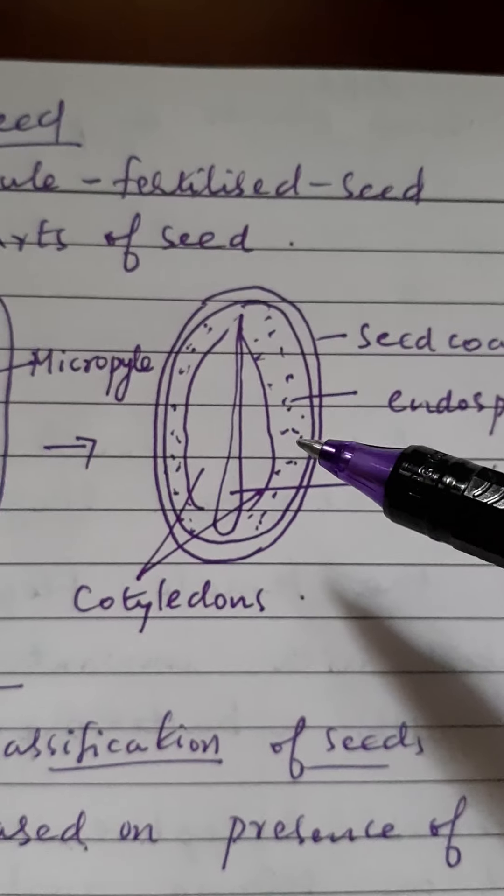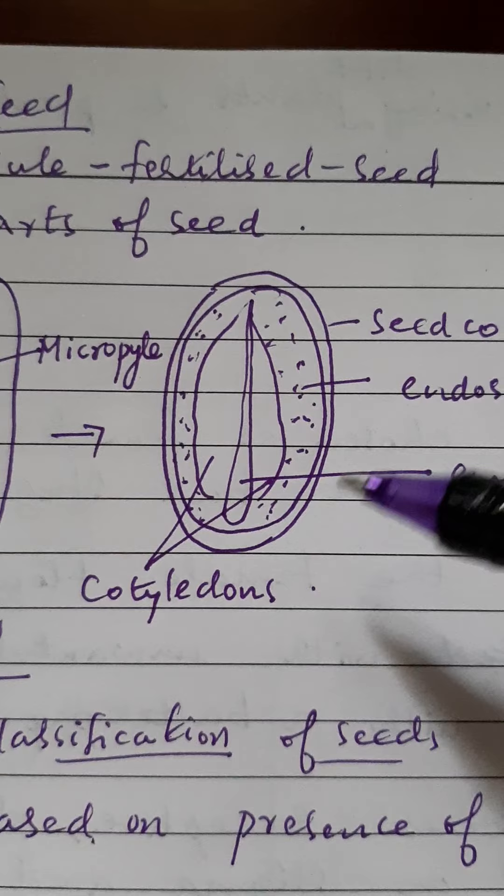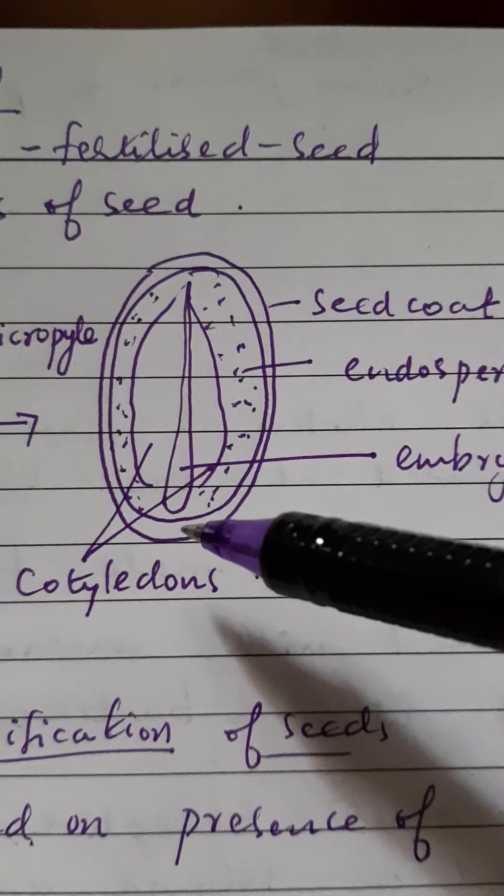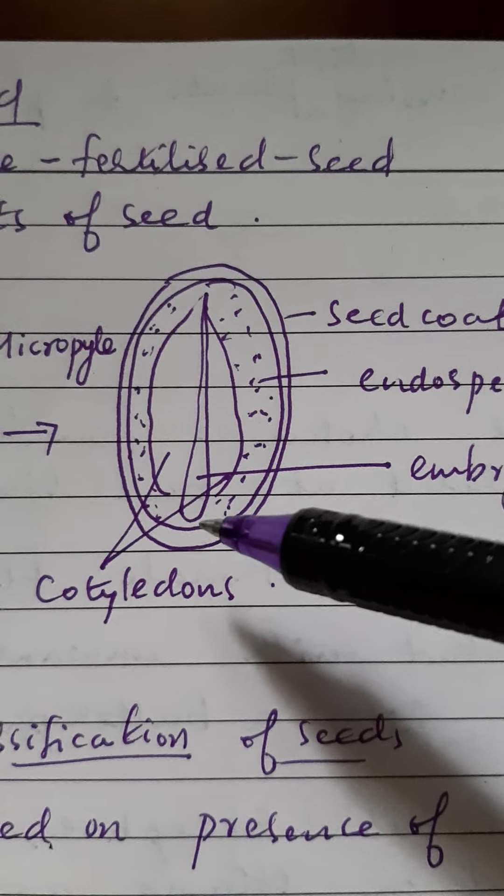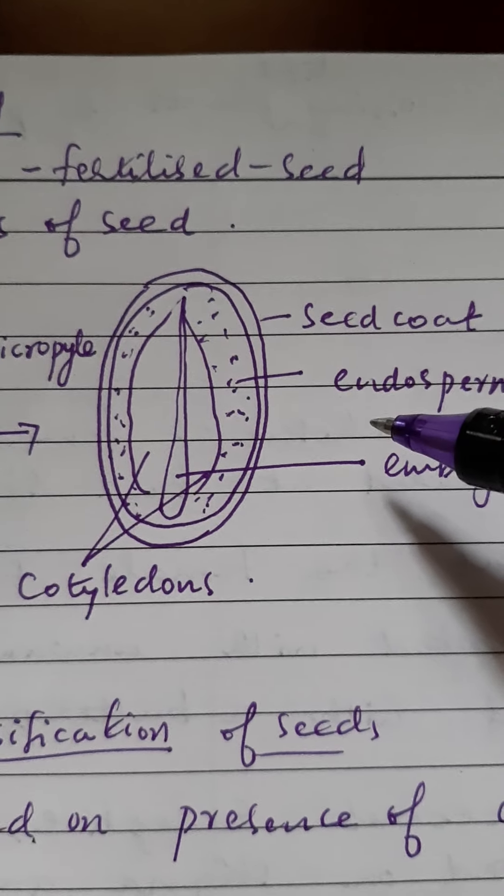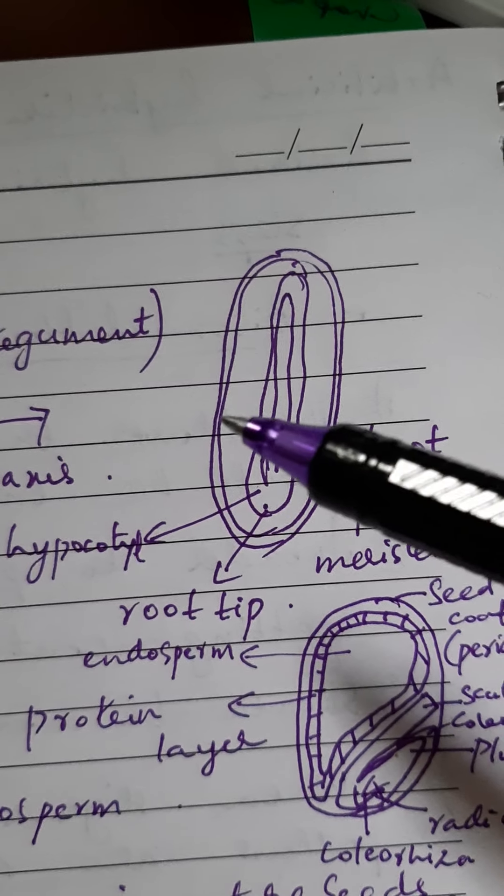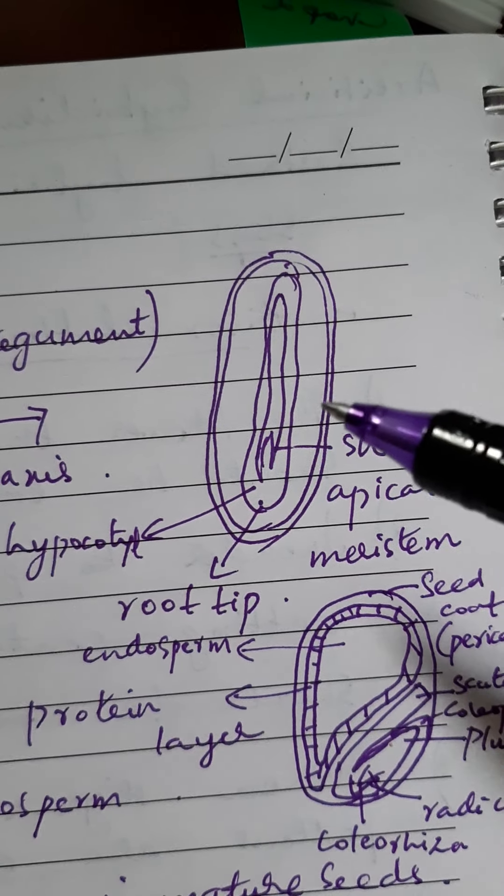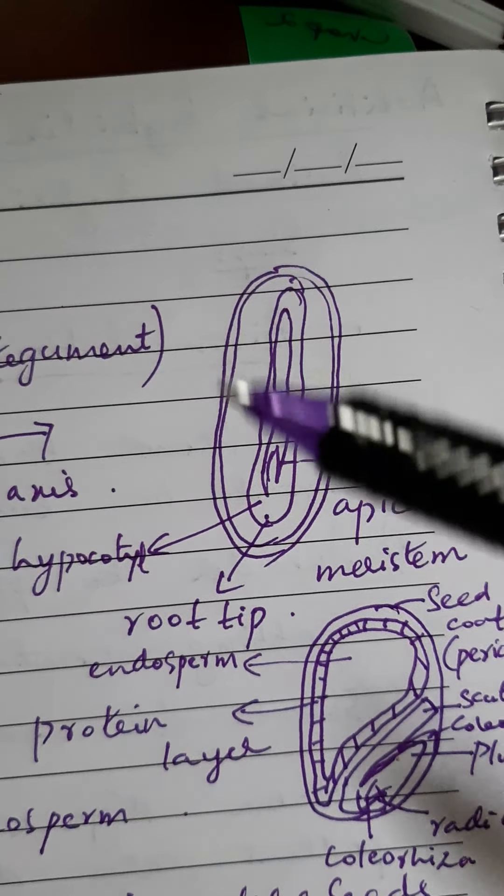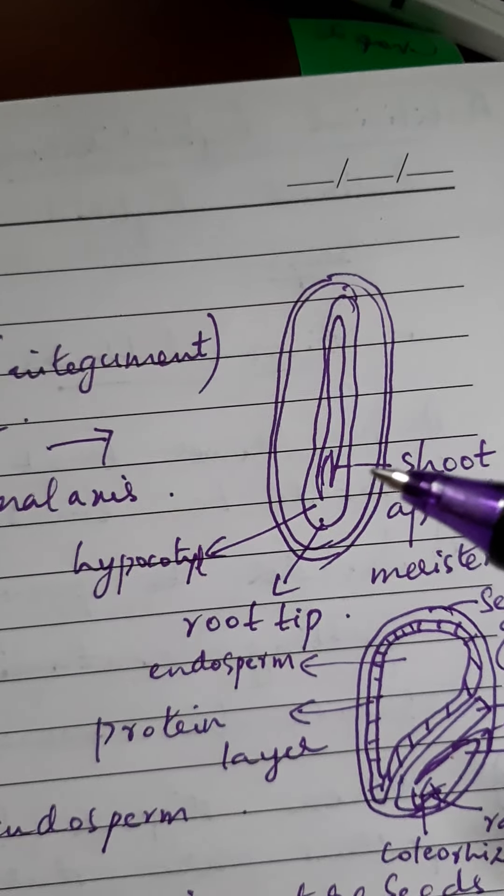The structure of a dicot seed - a dicot seed will have two cotyledons and what you see in the center is the embryonal axis. A dicot seed can have endosperm remaining in the mature seed or they may not have endosperm. So look at this seed. Here we can see the two cotyledons on both sides. We can also see the embryonal axis but endosperm is not present. So there are two types of seeds in dicot.